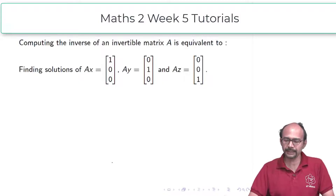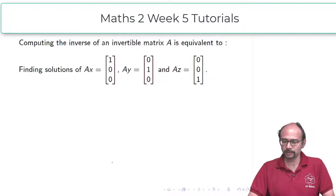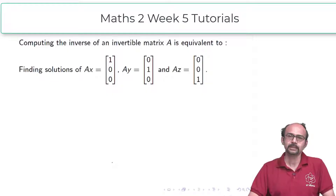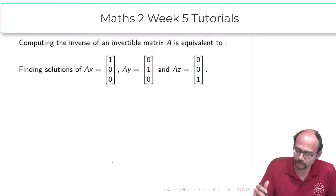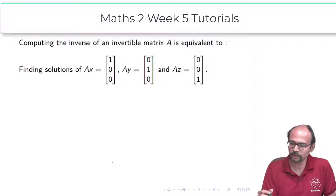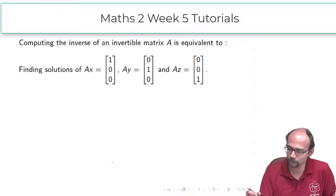How do I get A times B is identity? Let us do it for the 3 by 3 case. Suppose A is a 3 by 3 matrix. Then to say A times B is identity is the same as saying that A times the first column of B is (1,0,0), A times the second column of B is (0,1,0), and A times the third column of B is (0,0,1). Suppose I have solutions for Ax equals (1,0,0), Ay equals (0,1,0), and Az equals (0,0,1).